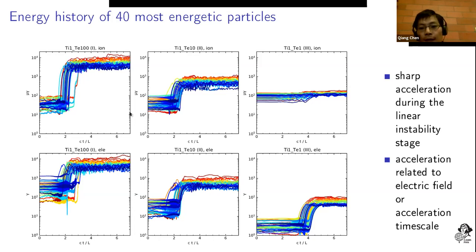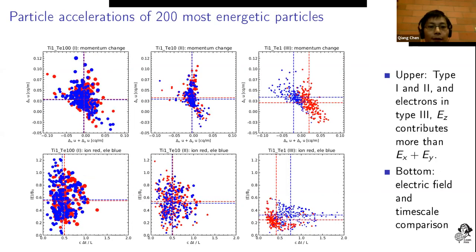The particle acceleration may be related to two main factors. One is the magnitude of the electric field. The other is the time interval that they used to accelerate. We want to decompose these two factors to understand which affects them more.